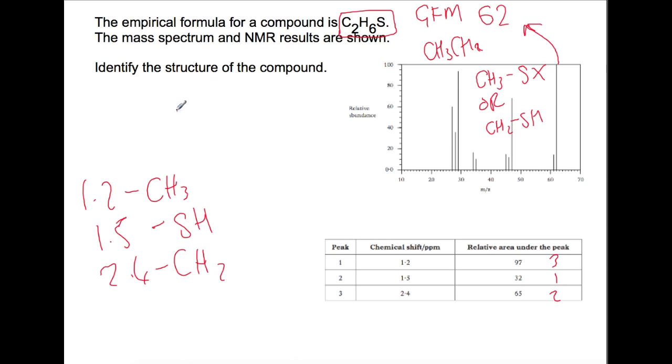Putting all of that together and joining it so that all of the elements have the correct valency. You have an SH on the end of the chain there, CH2 and then CH3.